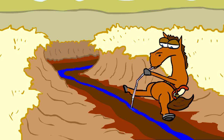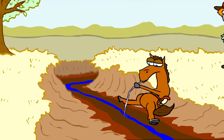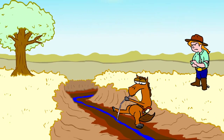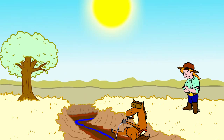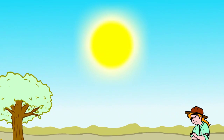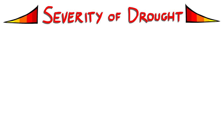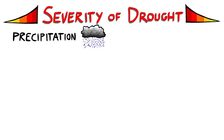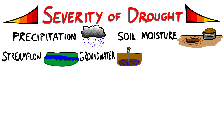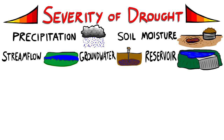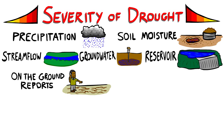At first look, drought seems simple enough — less water than we need or are accustomed to at a particular place and time of year. But as we dig a little deeper, it gets more complicated. The severity of drought is based on factors such as precipitation, soil moisture, stream flow, groundwater, and reservoir levels, and on-the-ground reports.